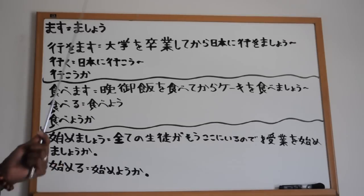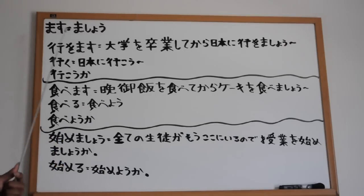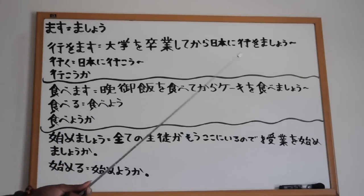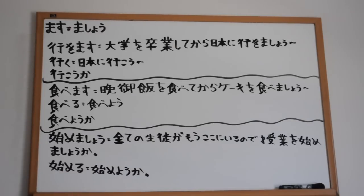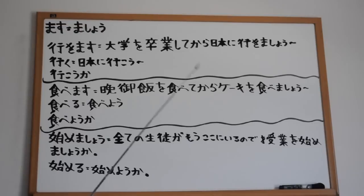For example: ikimasu becomes ikimashou. Tabemasu becomes tabemashou. Torimasu becomes torimashou. Yobimasu becomes yobimashou. Asobimasu becomes asobimashou. Mimasu becomes mimashou. That simple.